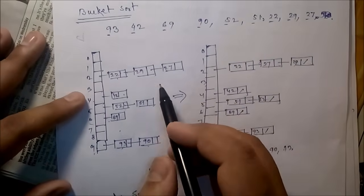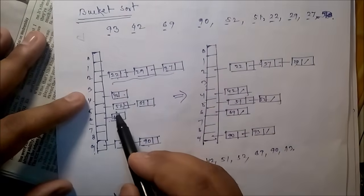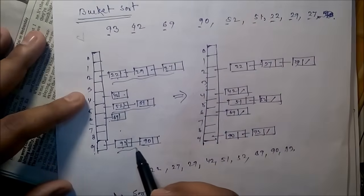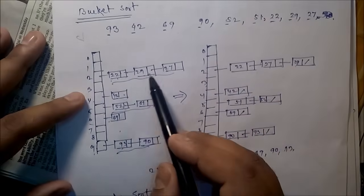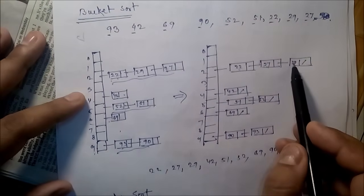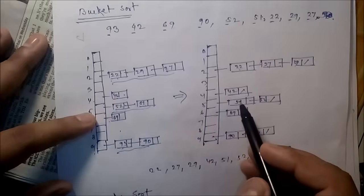Now sort this particular part, sort this particular part, sort this particular part and copy it. After sorting, 22, 29, 27 becomes 22, 27, 29. Similarly, 52, 51 becomes 51, 52. 93, 90 now becomes 90, 93.